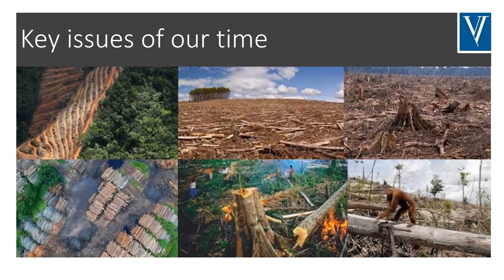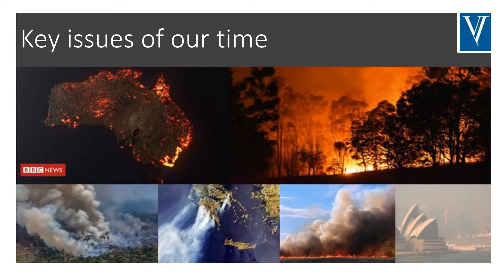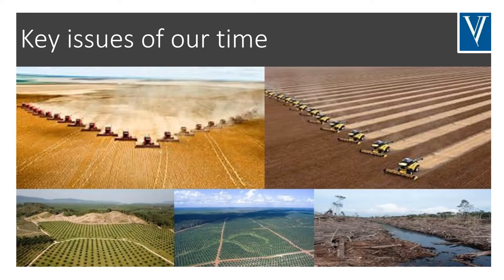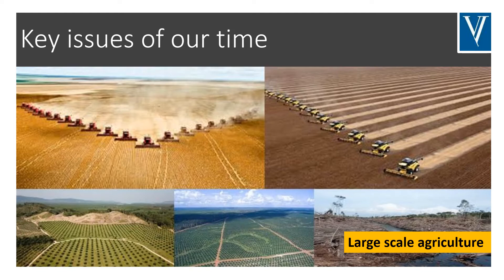Here we can see these images representing deforestation and habitat loss. These images here representing wildfires and poor air quality. And finally, we've got mass agriculture and monoculture — we can see in this image palm oil plantations as well.